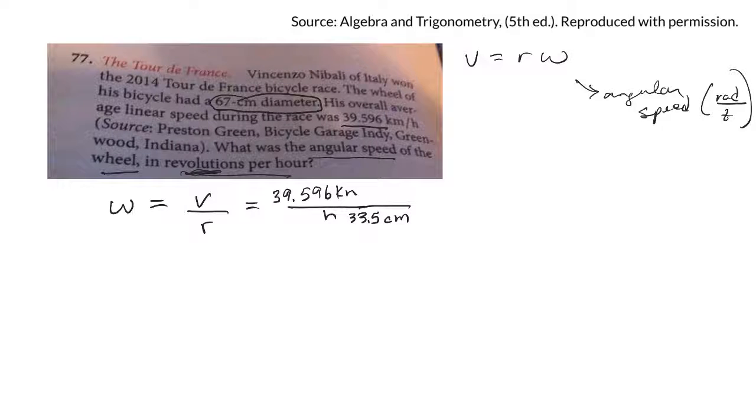Now, I've got a problem here because I have kilometers on top and centimeters on the bottom. I want to cancel those, but they have to be the same. So why don't we change the kilometers to centimeters? I can do that by saying one kilometer is the same as 100,000 centimeters. So now the kilometers cancel and the centimeters cancel.